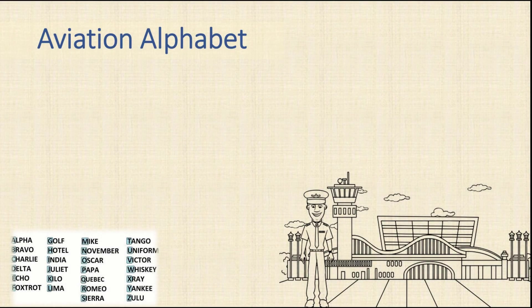Hello everyone. We are shooting a video about the aviation alphabet, or in other words, the ICAO phonetic alphabet. The alphabet is used to make communication within the aviation environment safe, clear, and easy to understand. The aviation alphabet is a phonetic alphabet commonly used among aviation professionals.